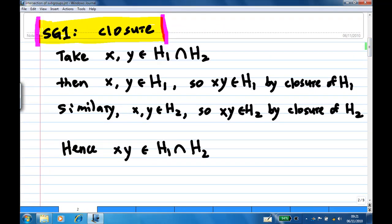First, subgroup test one, closure. Take x and y belong to the intersection of H1 and H2. Then we know x and y belong to H1. Therefore, the product of x and y also belong to H1 by closure of H1.